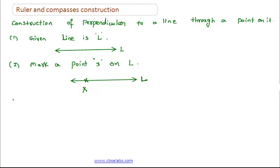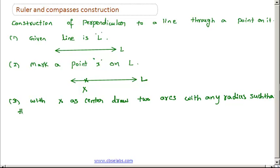Now the third step is: with X as center, draw two arcs with any radius, such that the two arcs cuts the line L at the two points A and B, like in this way.